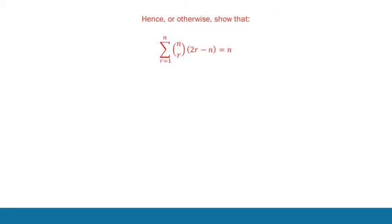This third problem is less obvious in what it needs. Obviously the previous results are going to tie back in in some way, but where to start is a little bit of a mystery. And when you're stuck, the best bet is always to expand things, to write things out the long way. It gives you a better picture of what's happening. So the first step is to write this sum out properly.